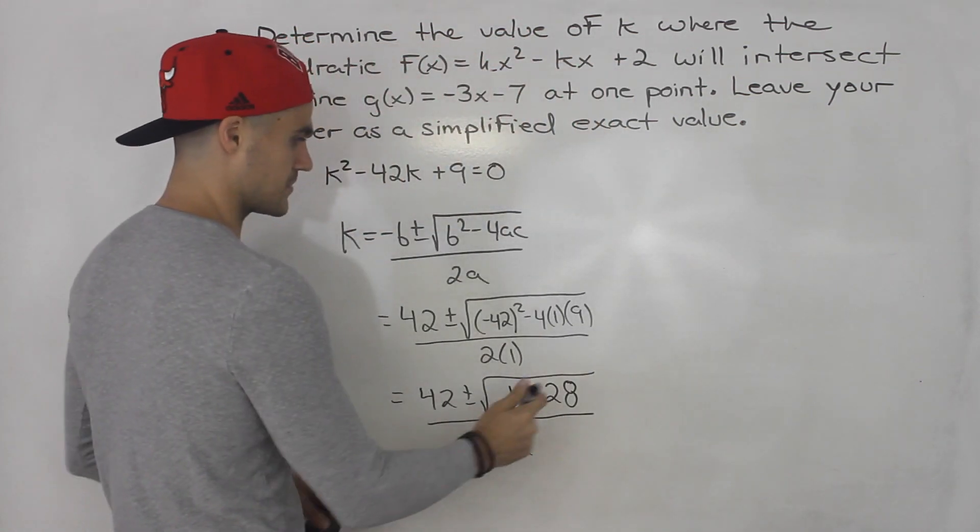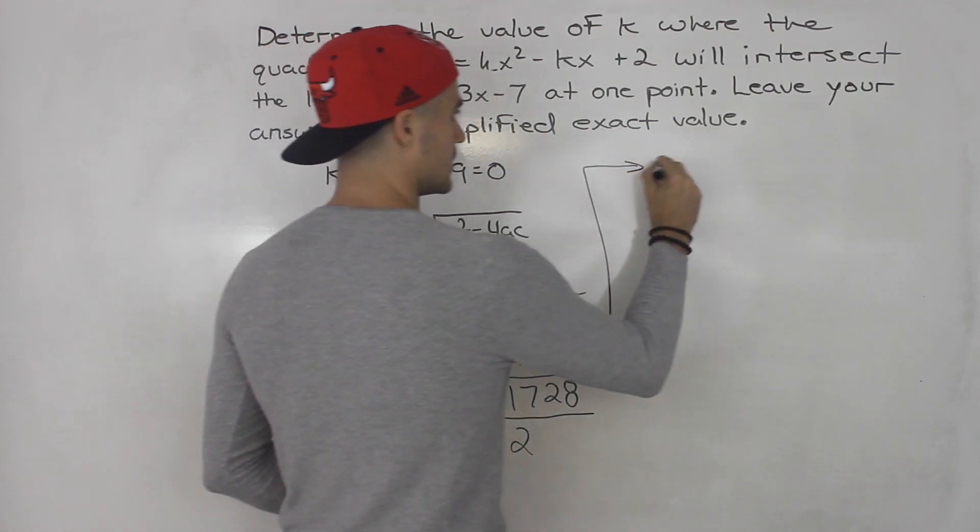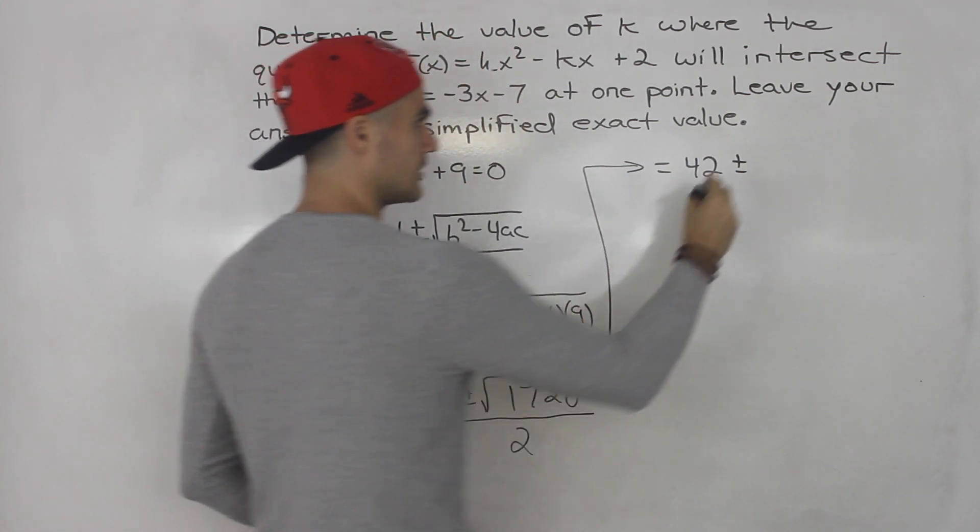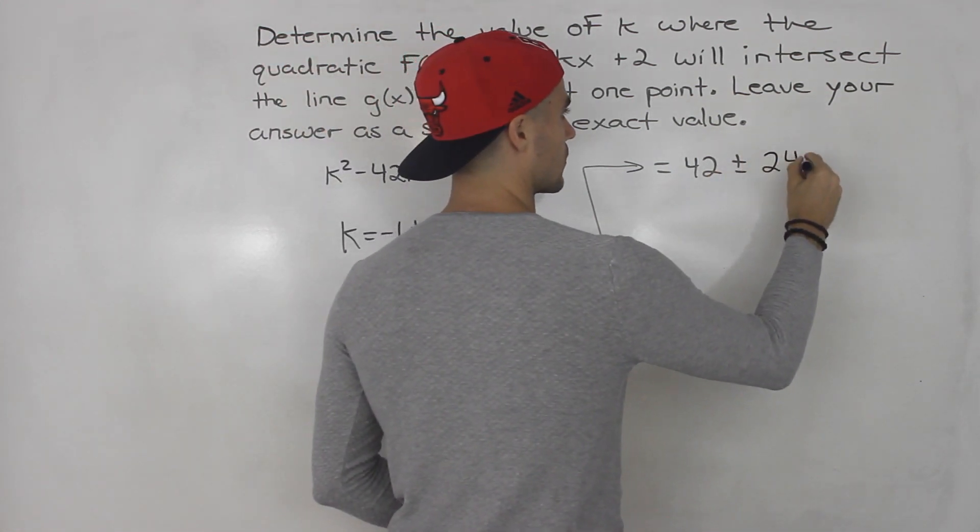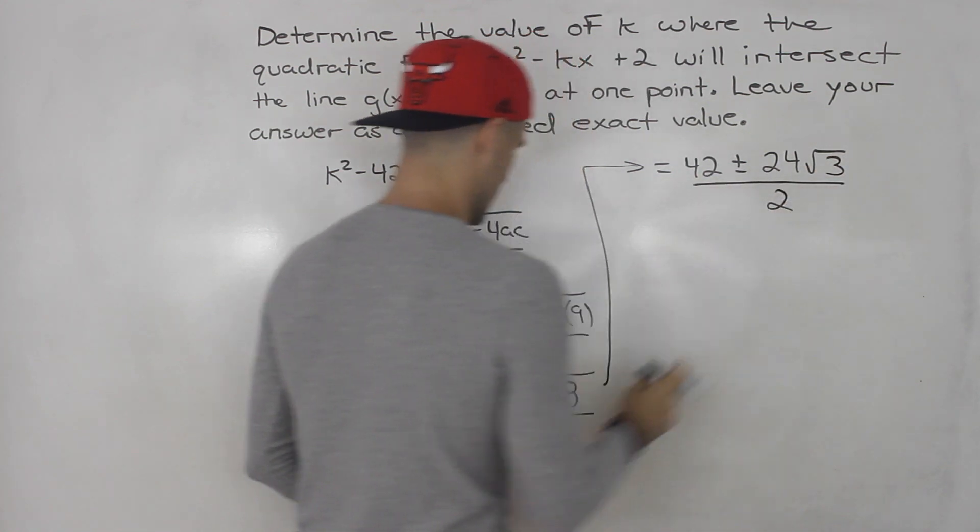So we know root 1728 is 24 root 3. So let's go back to this big expression we're dealing with. Let's continue up here. So we'll have 42 plus or minus root 1728, 24 root 3.